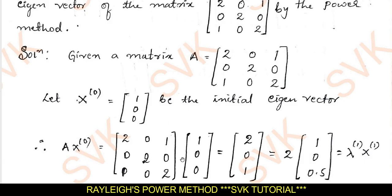I am going to consider these two matrices and find their matrix multiplication. When I perform the matrix multiplication, I got [2, 0, 1]. Out of these elements, 2 is the largest element. Dividing this matrix by 2, we get [1, 0, 0.5]. Here, 2 will be considered as the largest eigenvalue and [1, 0, 0.5] will be the corresponding eigenvector. I will name this as λ₁ and x₁, which is the first iteration.